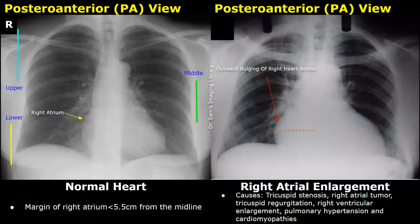The margin of the right atrium will be more than 5.5 centimeters from the midline in cases of significant right atrial enlargement. Causes include tricuspid stenosis, right atrial tumor, tricuspid regurgitation, right ventricular enlargement, pulmonary hypertension, and cardiomyopathies.